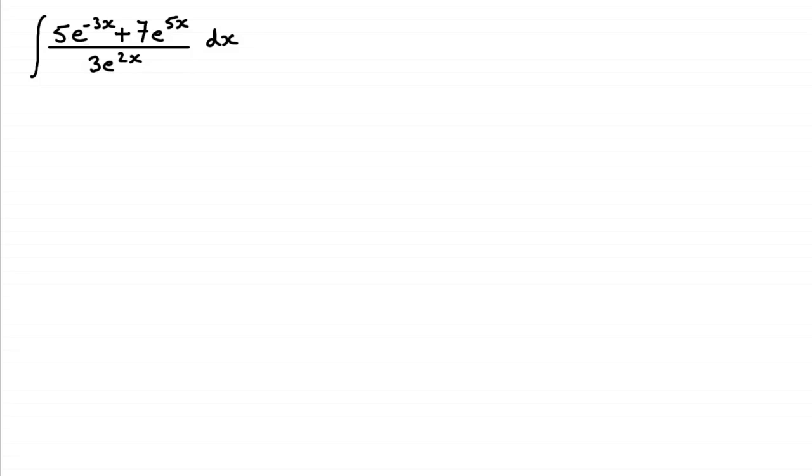Hi, now in this video what we've got here is this integral of 5e to the power minus 3x plus 7e to the power 5x all divided by 3e to the power 2x and we're integrating this with respect to x.